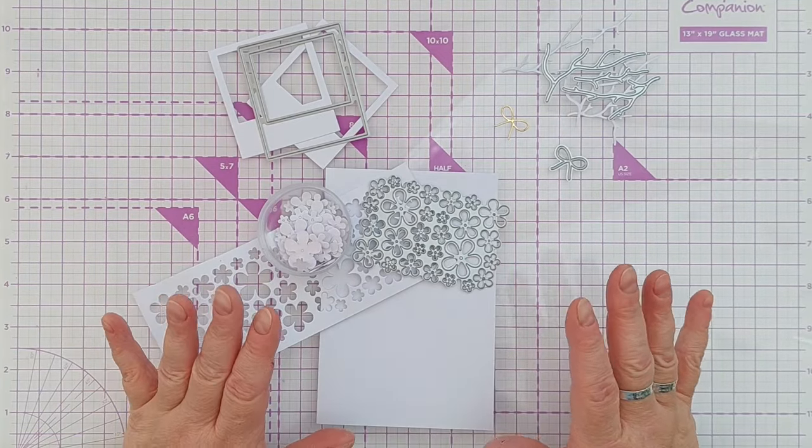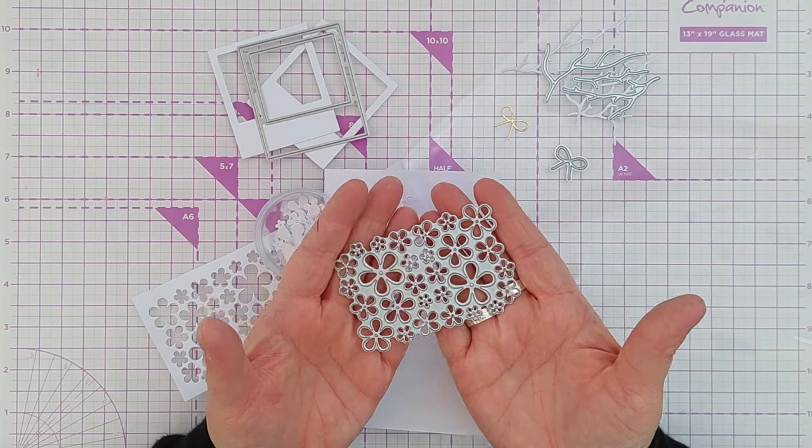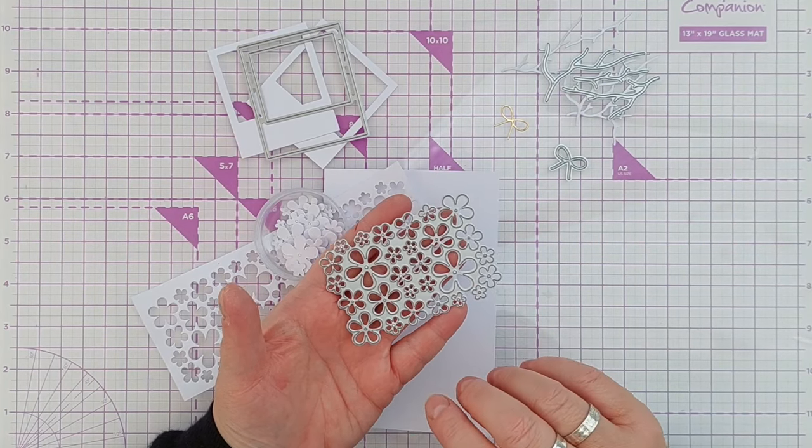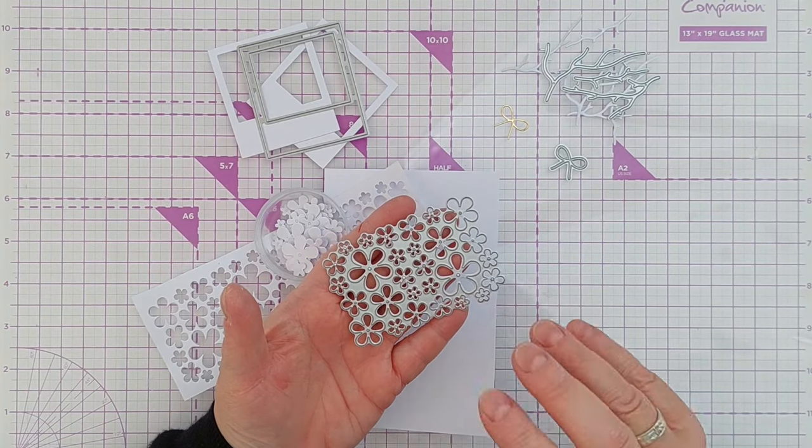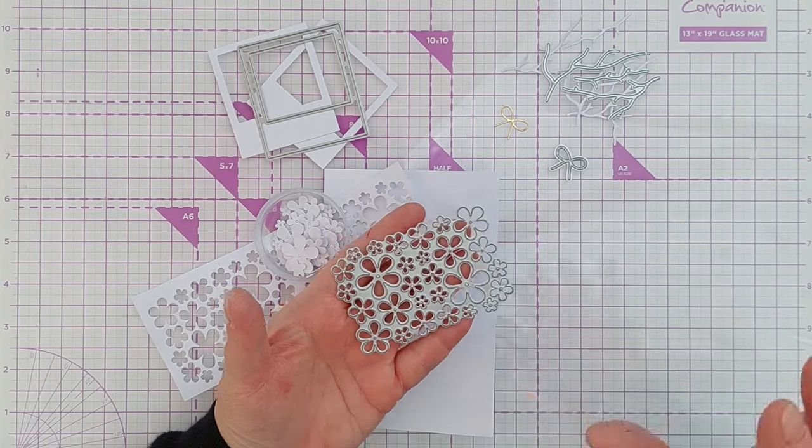So these are the dies that I'm going to use. I've got this multi-flower die, a recent purchase from Etsy. Just thought it would be really good to have another die with flowers that are all the same shape but lots of different sizes, and it can cut out lots really quickly.